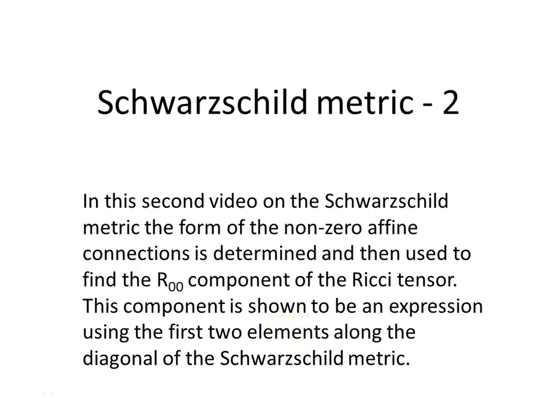In this second video on the Schwarzschild metric, the form of the non-zero affine connections is determined and then used to find the 0,0 component of the Ricci tensor. This component is shown to be an expression using the first two elements along the diagonal of the Schwarzschild metric.